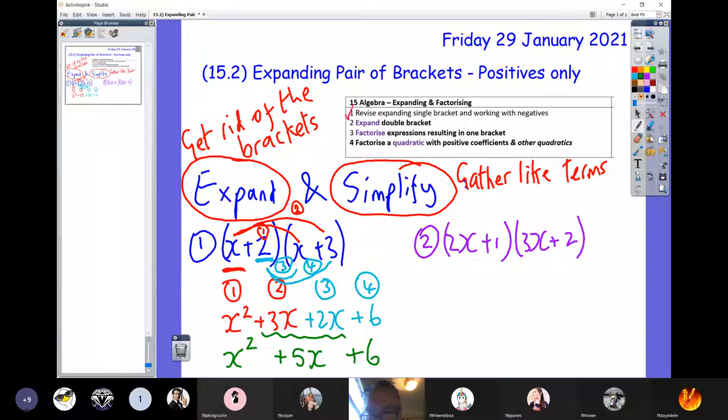We're now going to do example number two on the right in purple. Exactly the same process, exactly the same four claws, but it's slightly more complicated because we've got numbers in front of the x's. Claw number one and claw number two. I'm going green this time. Claw number one: 2x times 3x. Think about what you think that is. 2x times 3x is 2 times x times 3 times x. 2 times 3 is 6, and x times x is x squared.